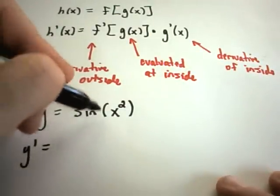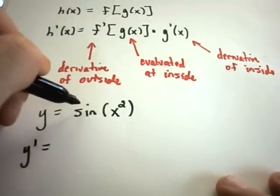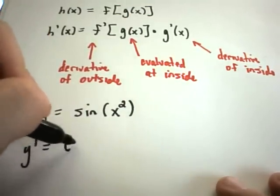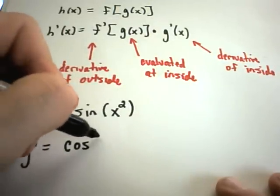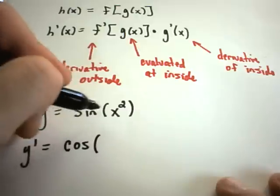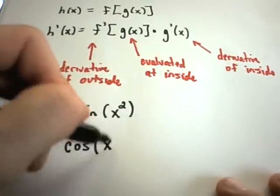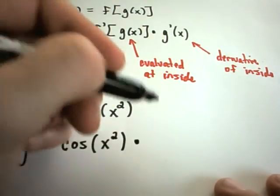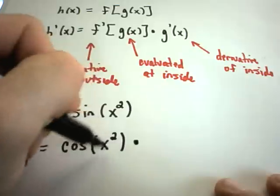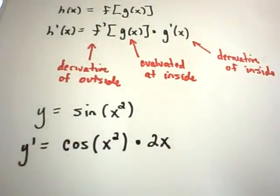Well, the outside function in this case is the sine function, and the derivative of sine is cosine. If it was sine of x, we would get cosine of x, but instead of sine of x, we have sine of x squared. So the derivative is going to be cosine of x squared, and this is where we have to multiply it by the derivative of the inside part. So we'll multiply this by our 2x.